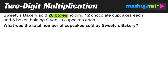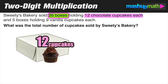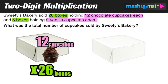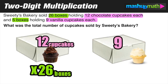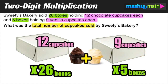Sweetie sold 26 boxes each holding 12 chocolate cupcakes, and five boxes containing nine vanilla cupcakes each. The vanilla cupcake boxes were each filled with nine cupcakes, and they sold five boxes of vanilla cupcakes. We want to find the combined totals of chocolate cupcakes and vanilla cupcakes.